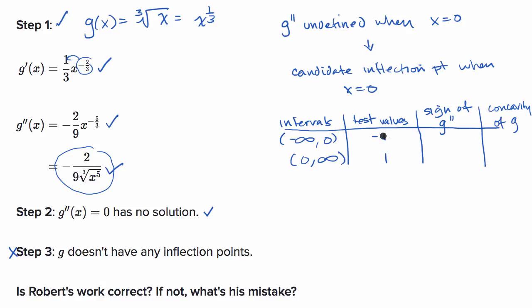When x equals negative one: negative one to the fifth power is negative one, cube root of negative one is negative one, so we have negative 2/9ths divided by negative one, which is positive 2/9ths. The sign is positive. This holds for any negative value — negative to the fifth stays negative, cube root stays negative, divided into negative 2/9ths gives positive. For a positive value, the result is negative 2/9ths divided by a positive, which is negative.